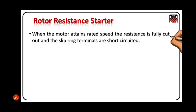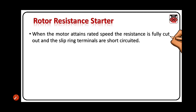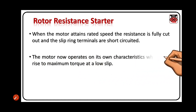When the motor attains rated speed, the resistance is fully cut out and the slip ring terminals are short circuited. The motor now operates on its own characteristic which gives rise to maximum torque at a low slip.